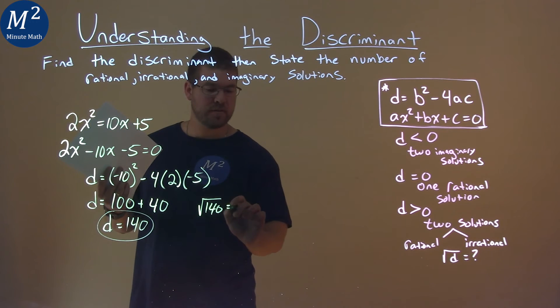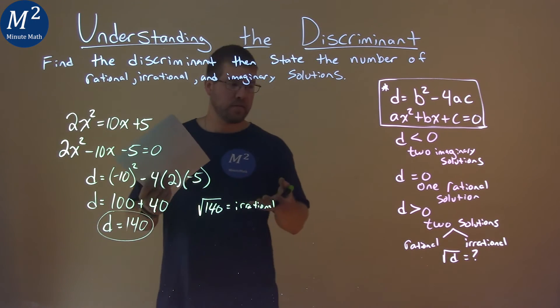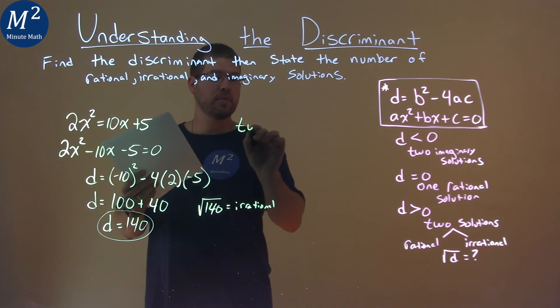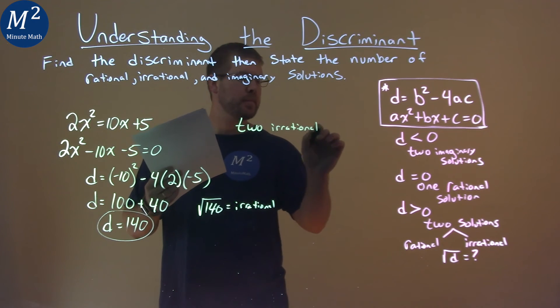It's not a rational number, it's irrational. And so, because of that, we can say we have two irrational solutions.